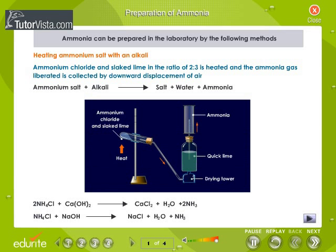Ammonia can be prepared in the laboratory by the following methods. Method one: heating ammonium salt with an alkali. Ammonium chloride and slaked lime in the ratio of 2:3 is heated, and the ammonia gas liberated is collected by downward displacement of air.